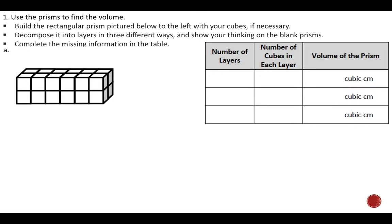Let's get into our first problem. We are going to be using this prism to find the volume. The first thing I'm going to do is find the height, which is always my number of layers. You can think of this prism as a cake — different layers of a building, different floors. The layers always refer to the height. This prism has a height of two, or two layers, so I'll put number of layers as two.